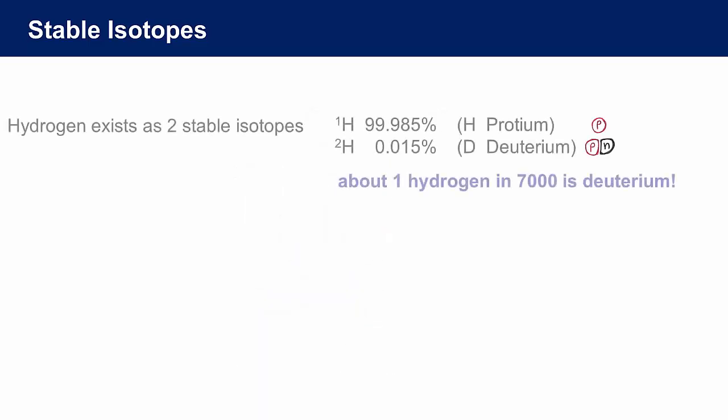Let's have a look at a couple of examples. If we consider the first element, hydrogen, by definition the nuclei of all hydrogen atoms contain one and only one proton. Most hydrogen atoms are the isotope of hydrogen with just one proton and no neutrons in its nucleus. We call this the 1H isotope, but it is also known as protium.